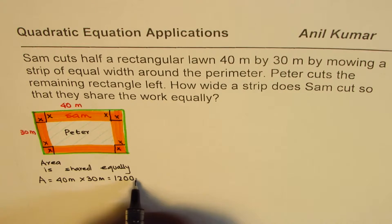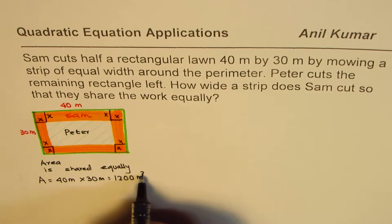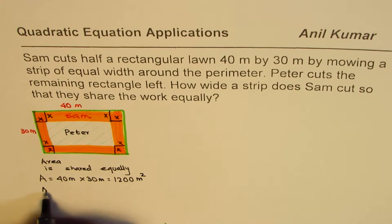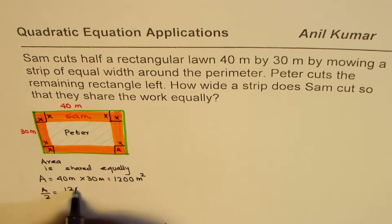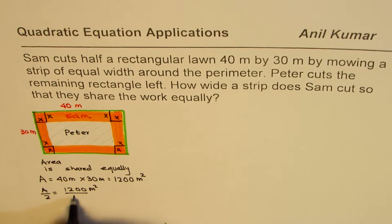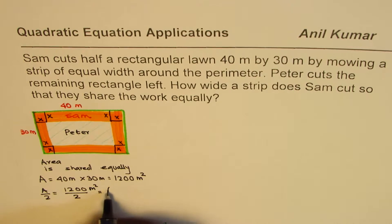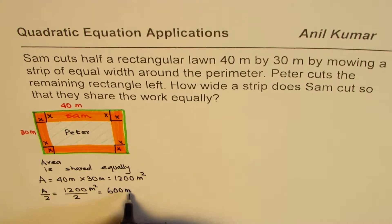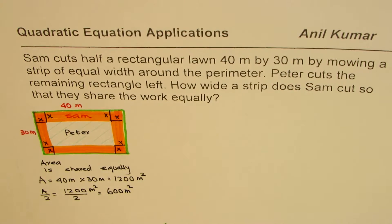Total area of this lawn is 40 meters by 30 meters, that is 4 times 3 is 12, then we have two zeros, 1200 meters squared. Each is doing half of it, so area divided by 2, which is 600 meters squared. Each is doing 600 meters squared of job, both of them.